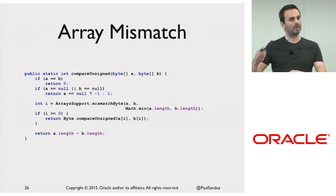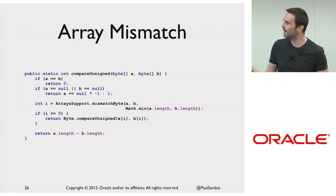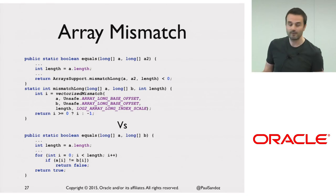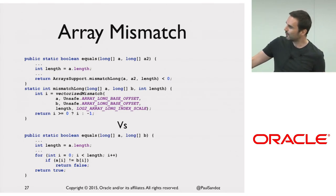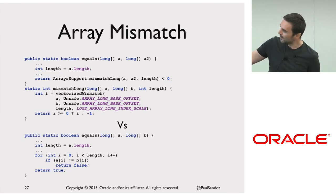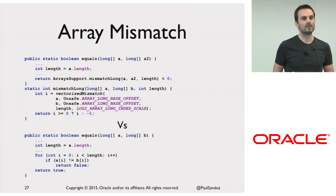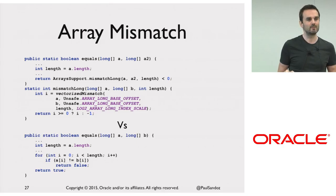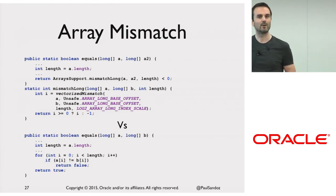We can implement compare unsigned in arrays like this — if we get a positive value we compare bytes unsigned, otherwise we return length. We can do that for bytes, char, short, and longs as well. The question is: if I implement this in longs using this and compare it to equals using the simple thing, does the code perform the same? Which one's faster, which one's slower?